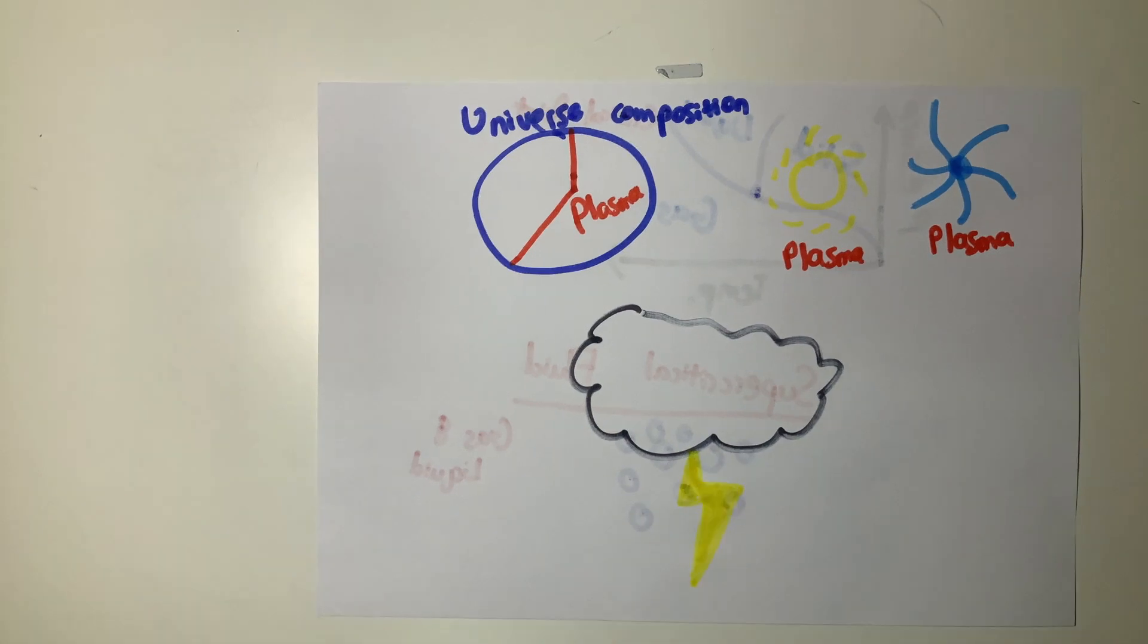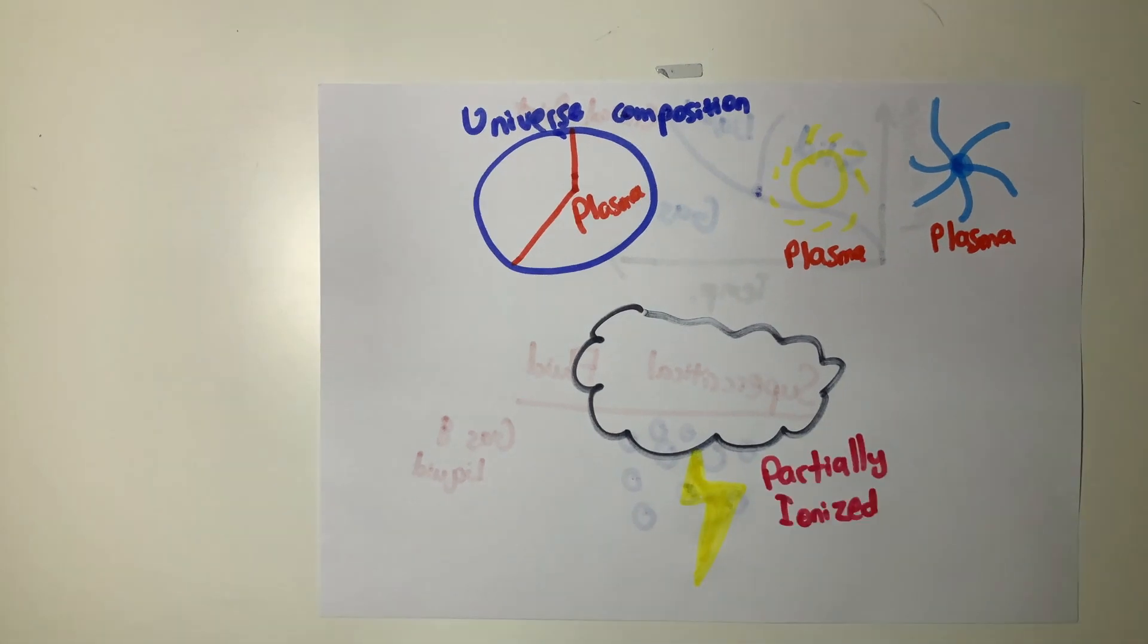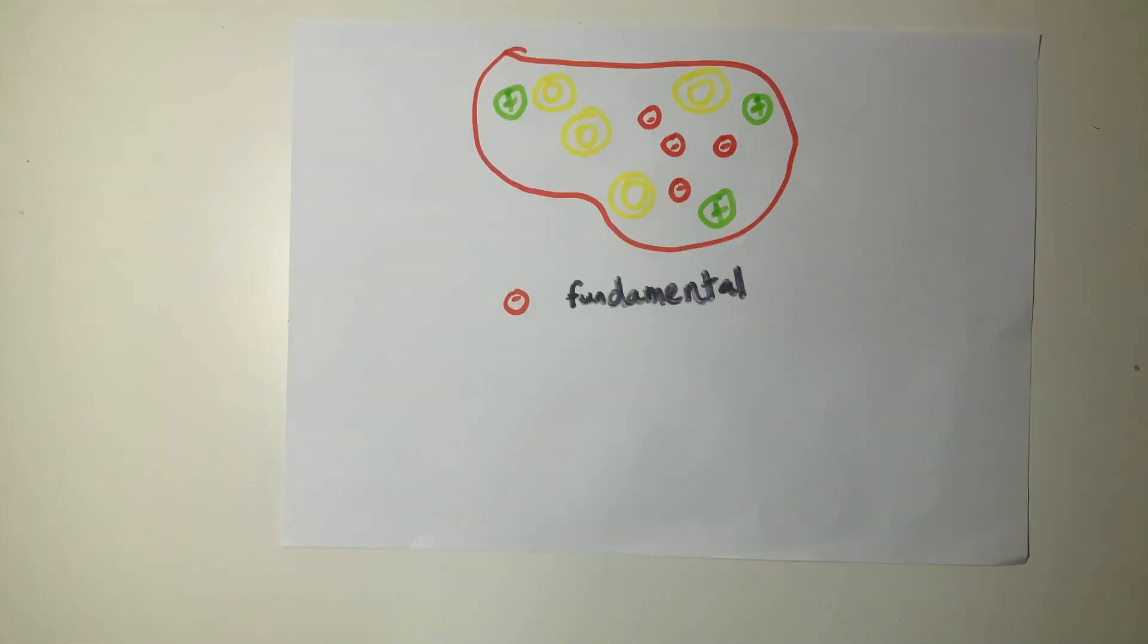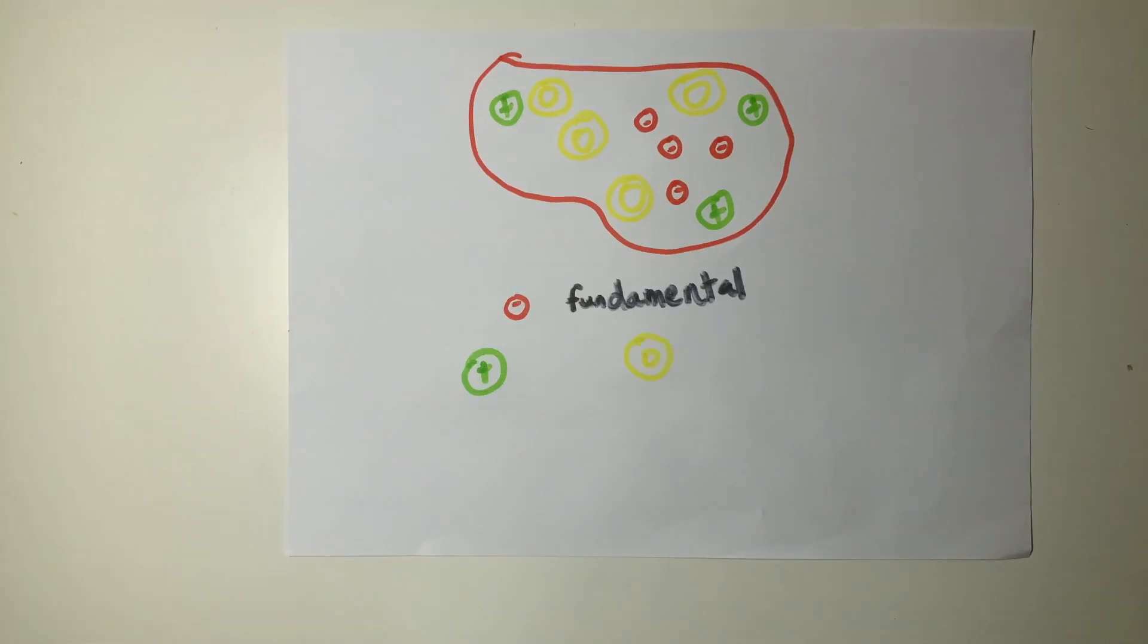The particles plasma is composed of are protons, neutrons, and electrons. While electrons are fundamental particles, the protons and neutrons are composed of even smaller particles known as quarks and gluons, which are bound together by incredibly strong forces.